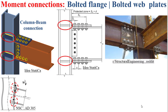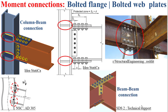We can also examine a real picture of a bolted flange, bolted web plates moment connection. You can distinguish how the flange and web plates are bolted to the flanges and the web of the beam (the child member) and how they are welded to the flange of the column (the parent member). It is also worth noting that this connection can be carried out between a secondary beam as child member and a primary beam as parent member, almost in the same way as for the column-beam connection.